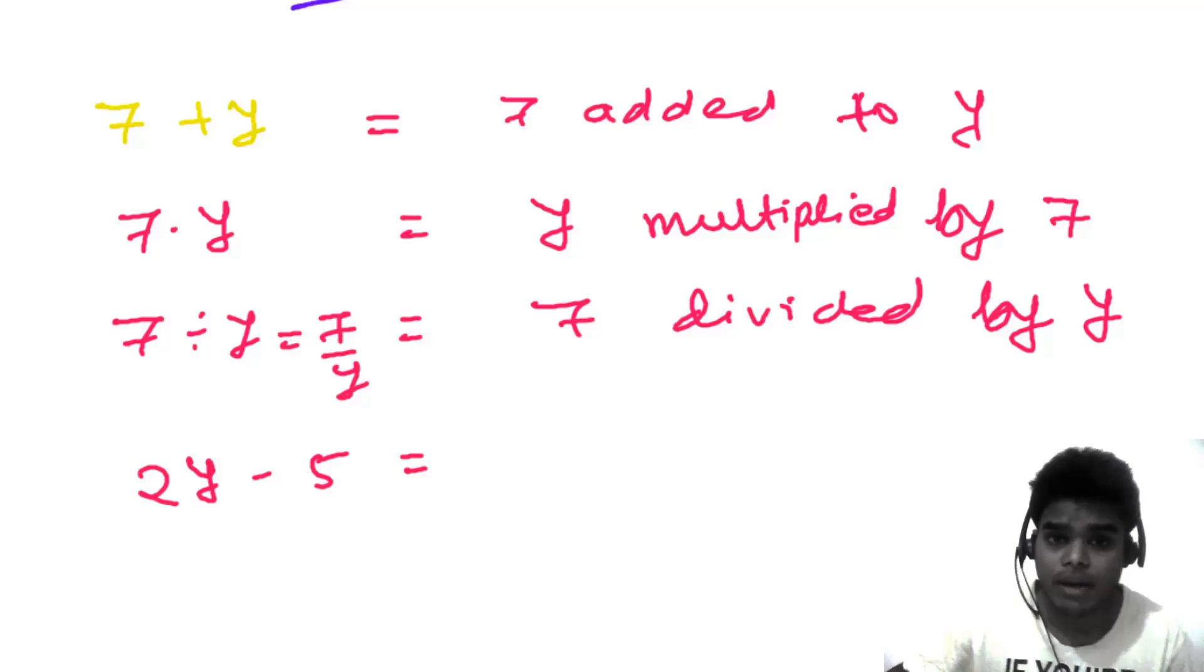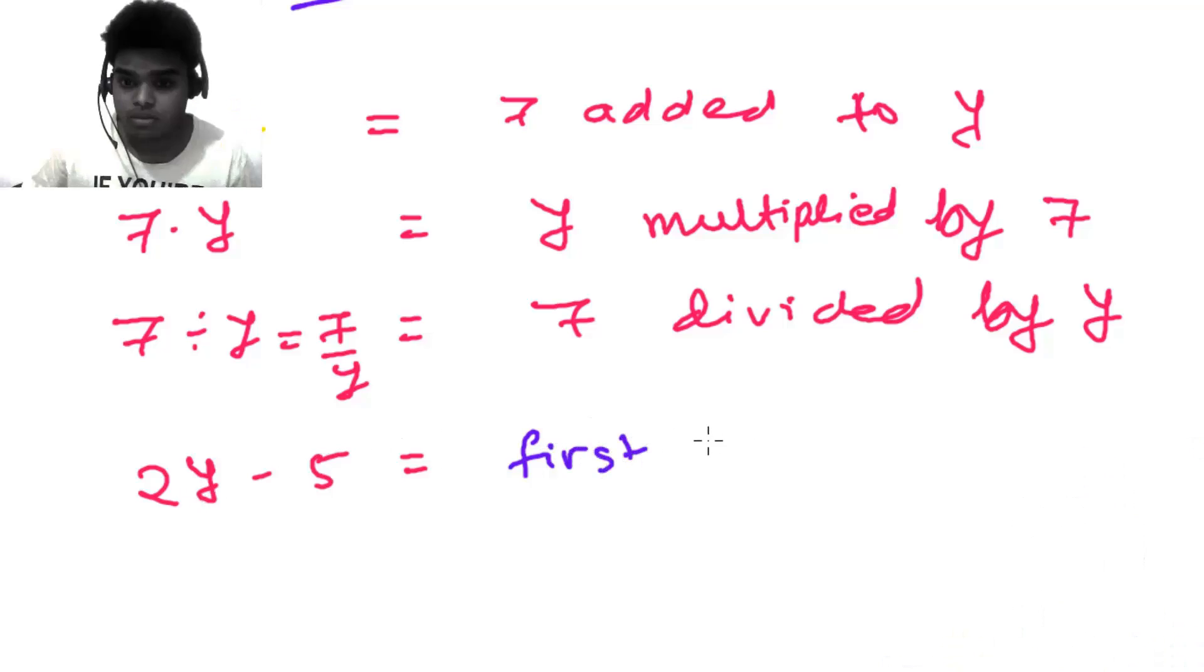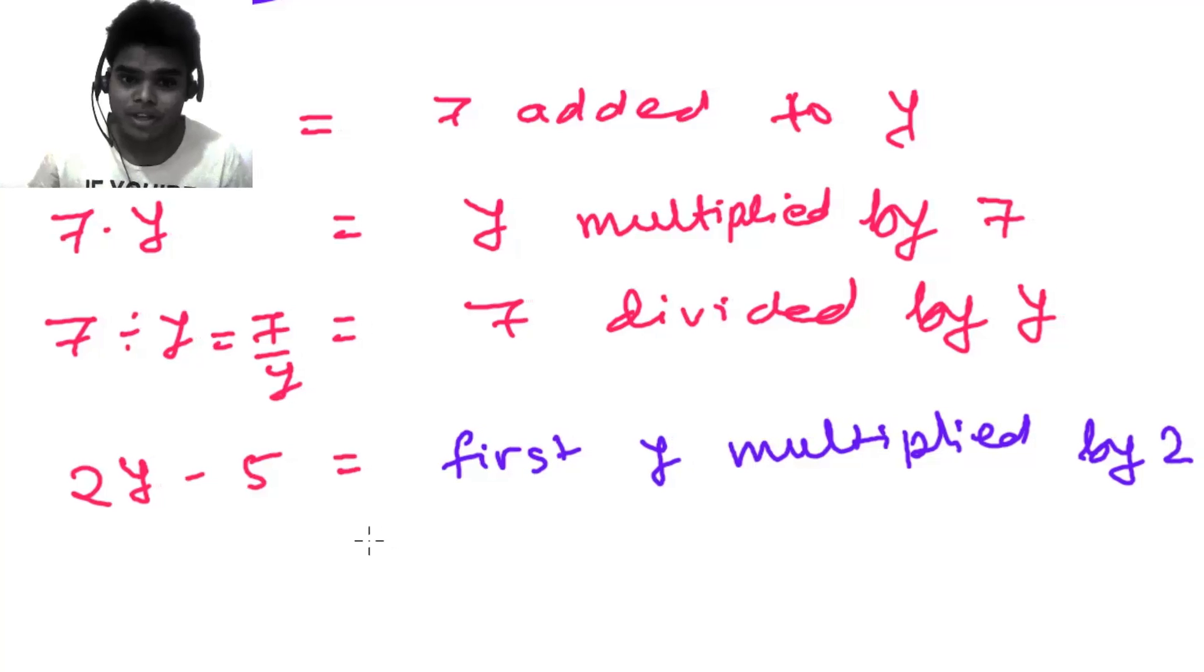So how are you going to write this? I mean, how are you going to speak this? There are two processes. First, y multiplied by 2, and then 5 subtracted from the product.